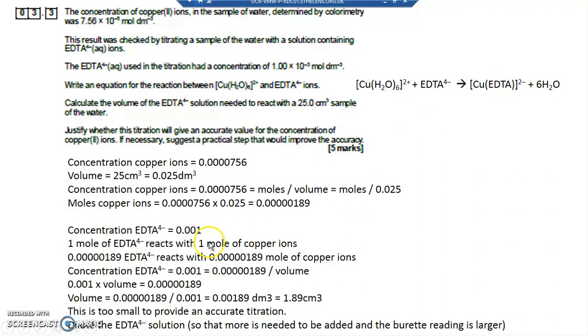One mole of EDTA reacts with one mole of copper ions. We know we've got this number of copper ions, so we must have this number of moles of EDTA. One thing it does want to work out is the concentration of EDTA. Concentration of EDTA equals 0.001. So it tells you that here, 1 times 10 to the minus 3.